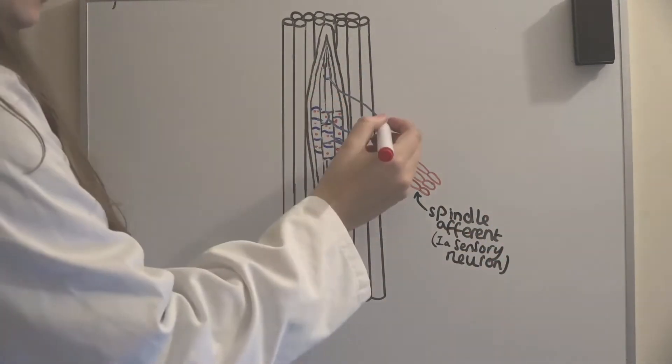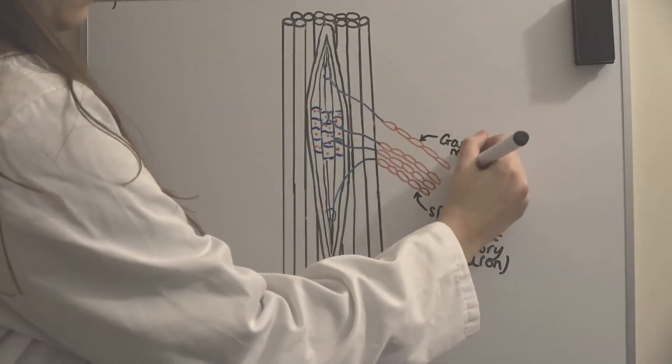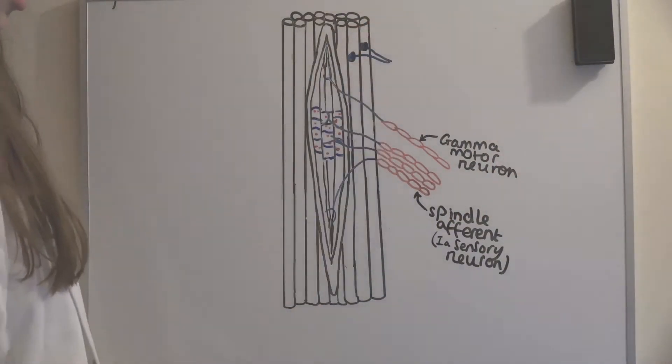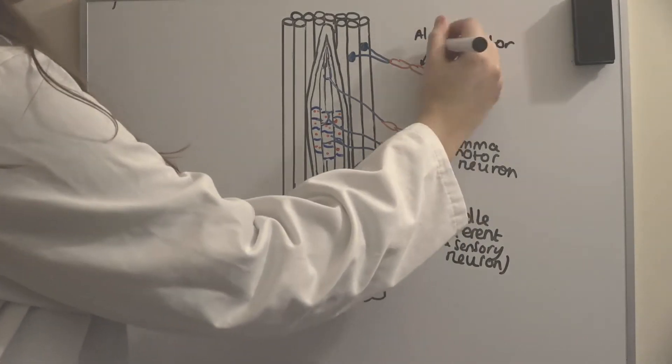The muscle spindles are also innervated by axons of gamma motor neurons. These neurons stimulate the intrafusal fibers, which adjust the tension within the muscle as the extrafusal muscles contract to adjust the sensitivity of the response.